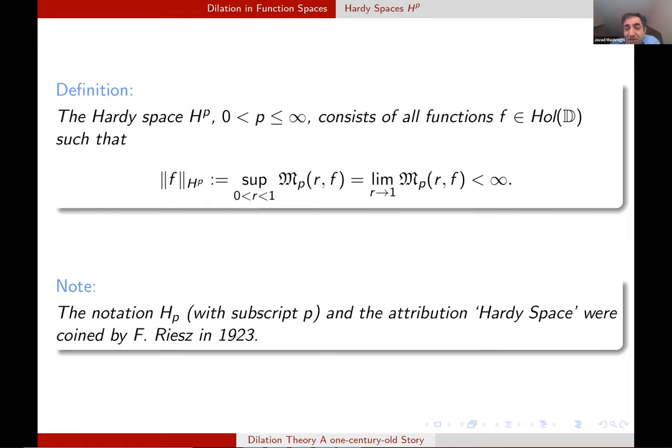And the definition, since based on the observation of Hardy, this quantity is increasing. We can say either supremum or limit. If this quantity is finite, we call it the norm of F. And the Hardy spaces are those for which this quantity is finite. And the notation, H^p with superindex p, and the attribution, Hardy space, was coined by our hero, F. Riesz in 1923. That also justifies the title of my talk, a one-century-old story. So it goes back way to a hundred years ago.